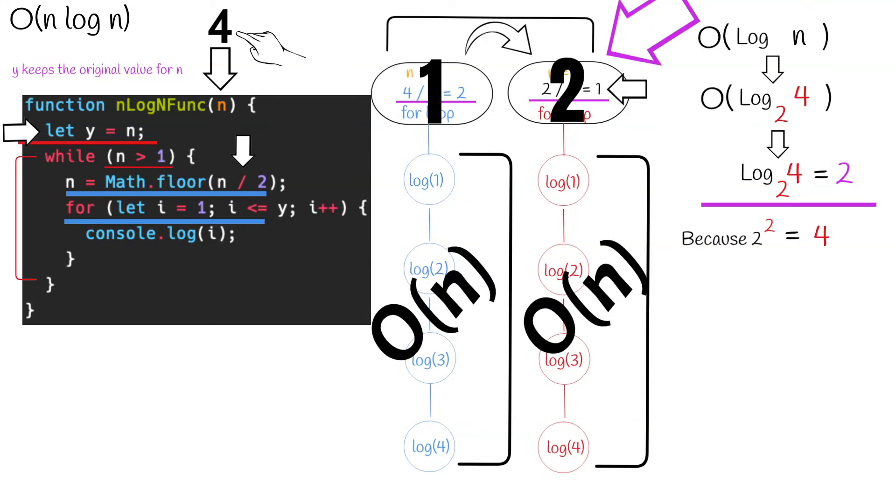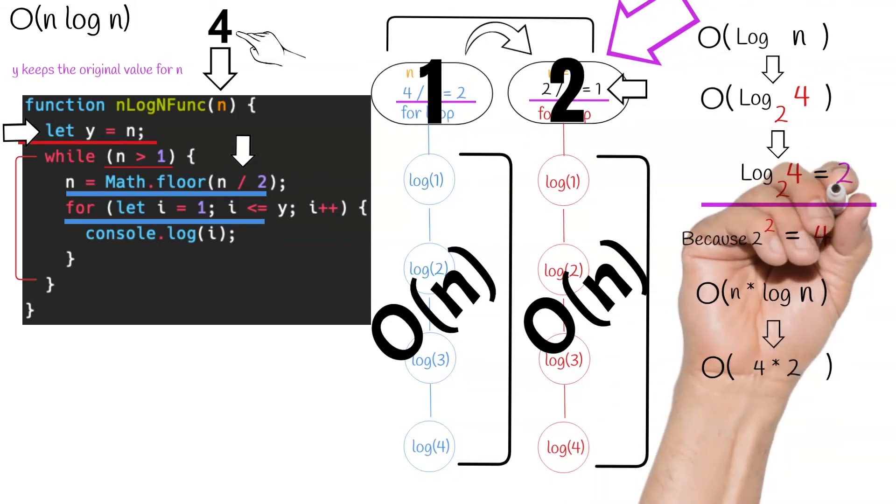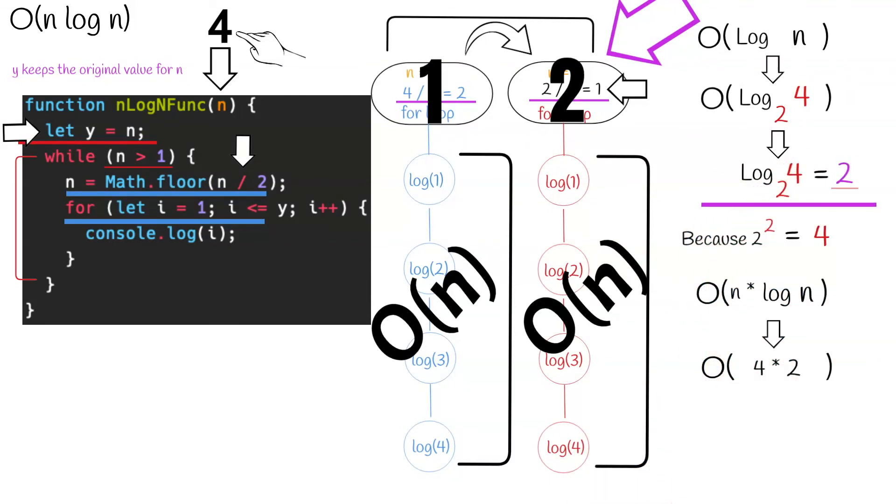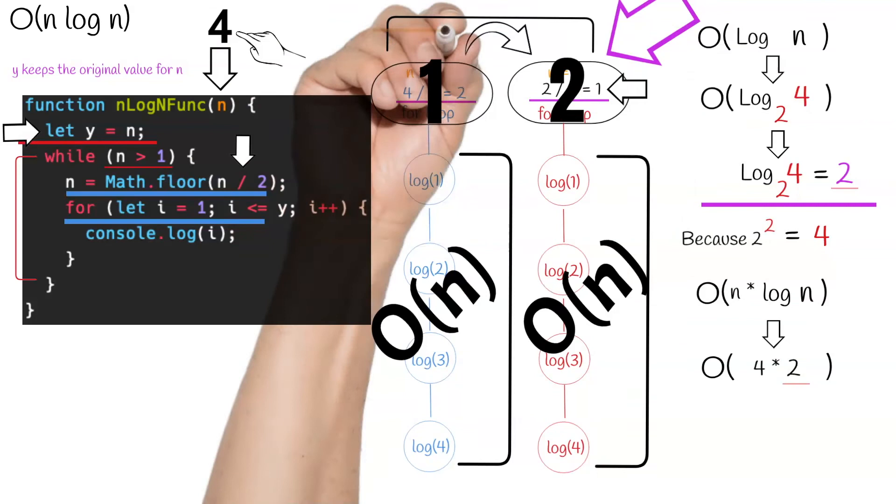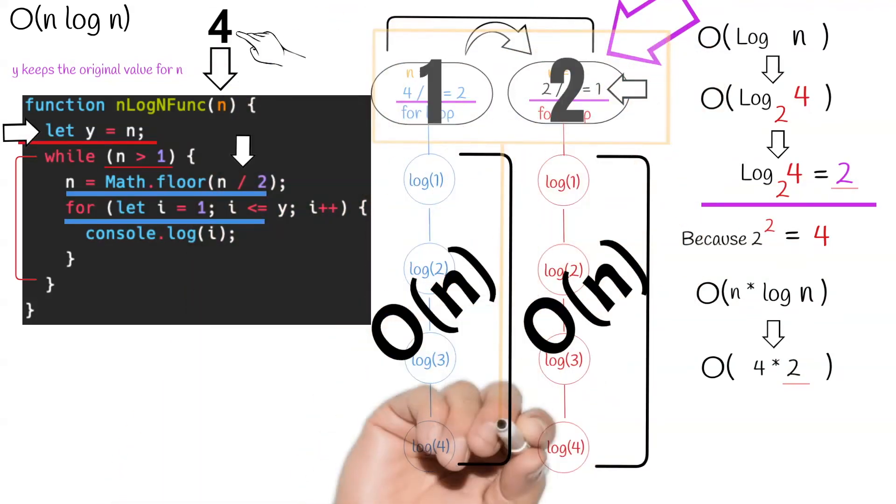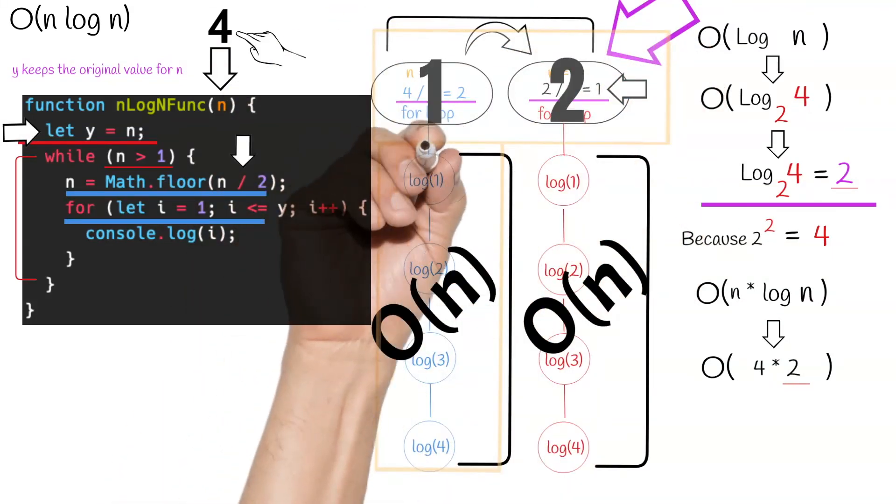Now this is where we bring everything together. O of n log n really just means O of n times log n. And if we plug in some numbers here, we get this. Because remember, log base two of four equals two. And if you look at our visualization, it makes perfect sense. Because for each iteration of the top loop, we iterate through the entirety of y, which is our original value for n.